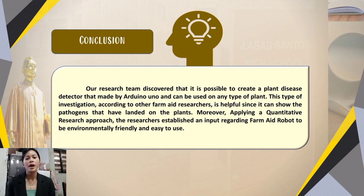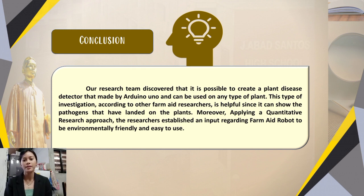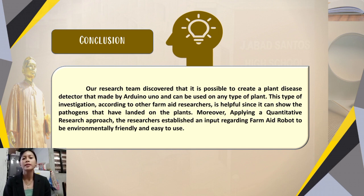In conclusion, in this modern era everything is advancing and modernizing, and diseases and viruses have also evolved. There are plant diseases and viruses that greatly affect plants and farmers. The researchers conducted a project called farm aid that helps farmers determine if plants have diseases or viruses. The research team discovered that it is possible to create a plant disease detector made using Arduino that can be used on any type of plant, and a quantitative research approach was applied to ensure the robot is environmentally friendly and easy to use.